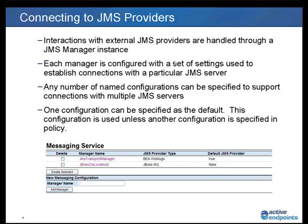In order to enable JMS transport, the first thing you need to accomplish is how to connect with an external JMS provider. That's handled through instances of a JMS manager included with the ActiveVOS Enterprise product. The manager is configured with settings that establish connections with a particular JMS server, and there can be any number of configurations to support connections to multiple JMS servers or providers. One of these configurations can be set as the default, and that's the one used unless another configuration is specified in policy. If you're communicating with only one JMS server, one default configuration should be sufficient.